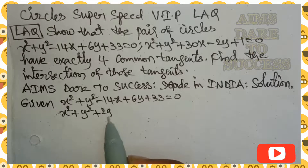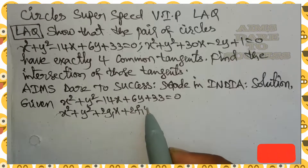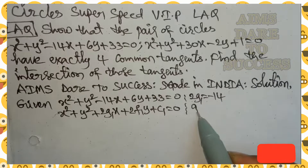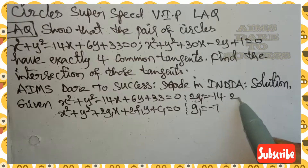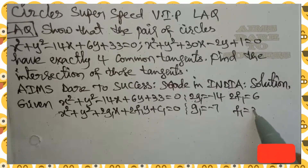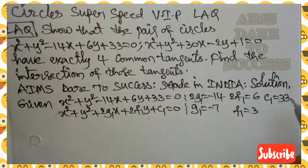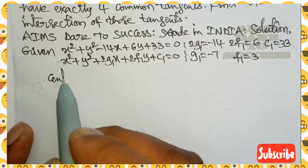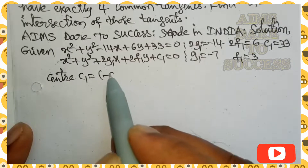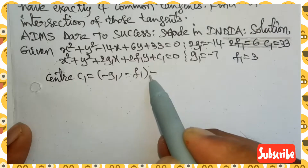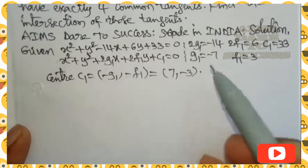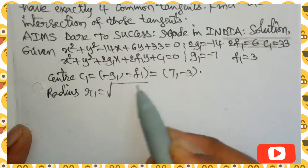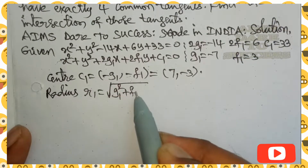Solution: The first circle is x² + y² - 14x + 6y + 33 = 0. This is in the form x² + y² + 2g₁x + 2f₁y + c₁ = 0. Comparing x-coefficients: 2g₁ = -14, so g₁ = -7. Comparing y-coefficients: 2f₁ = 6, so f₁ = 3. The constant c₁ = 33. The center formula gives C₁ = (-g₁, -f₁), so C₁ = (7, -3).